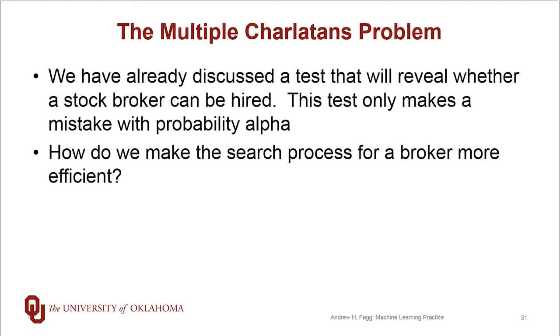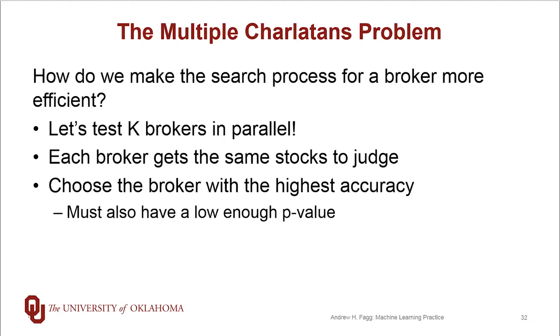So one question for you is how we might make this search process for a broker more efficient than we've already presented. And the reality is we might interview one broker and have to make a decision, and then we go on to the next broker and the next broker. And the answer is, rather than doing this search serially, let's do this in parallel. So we're going to test K brokers at once.